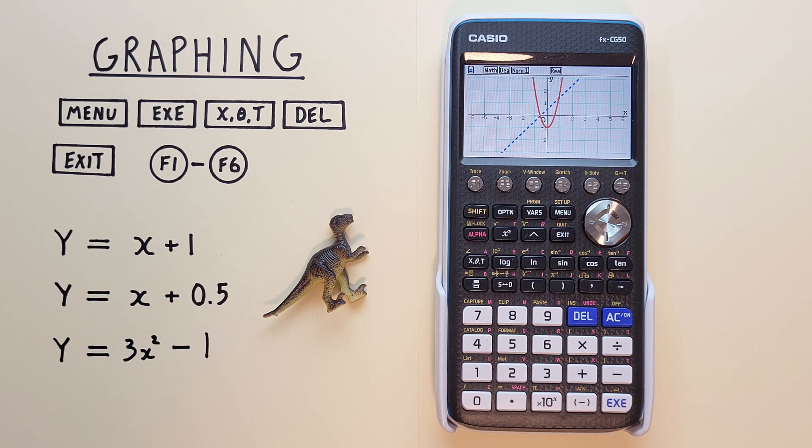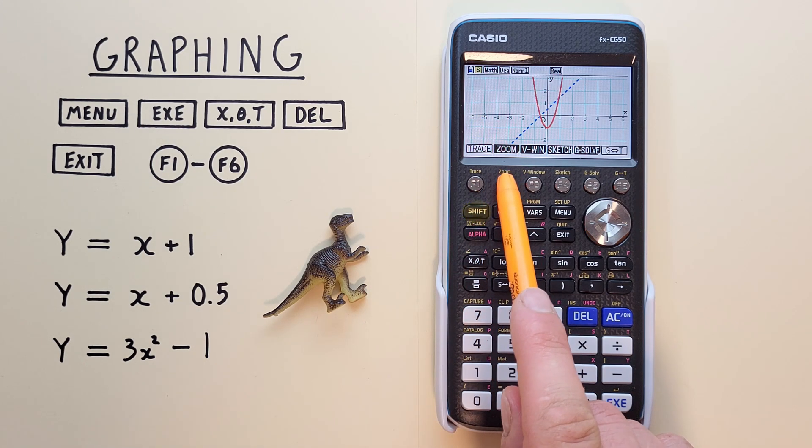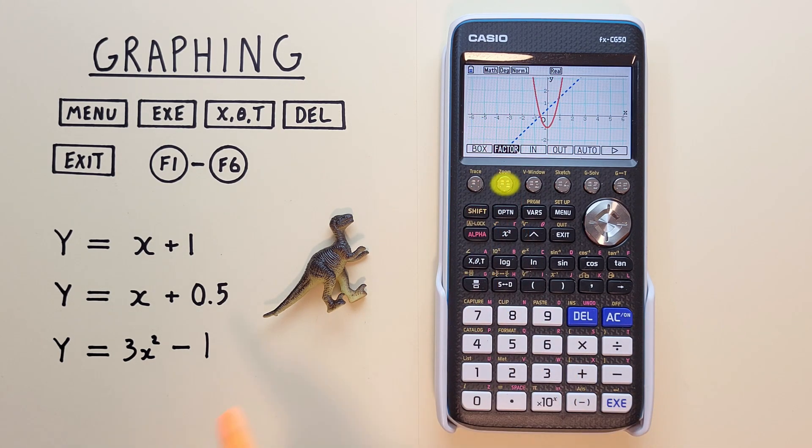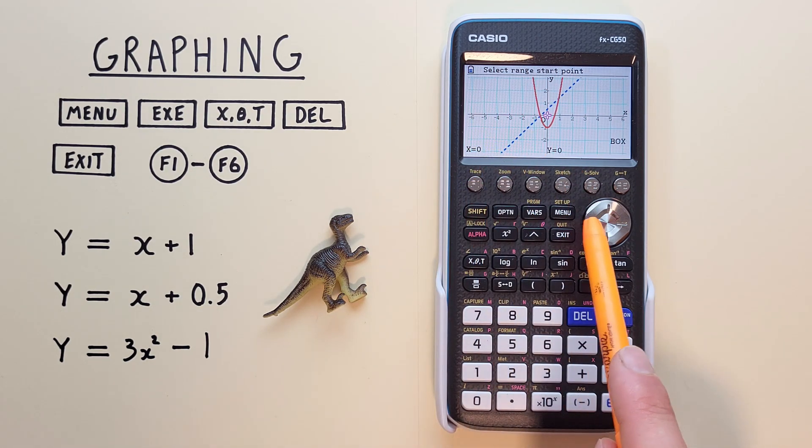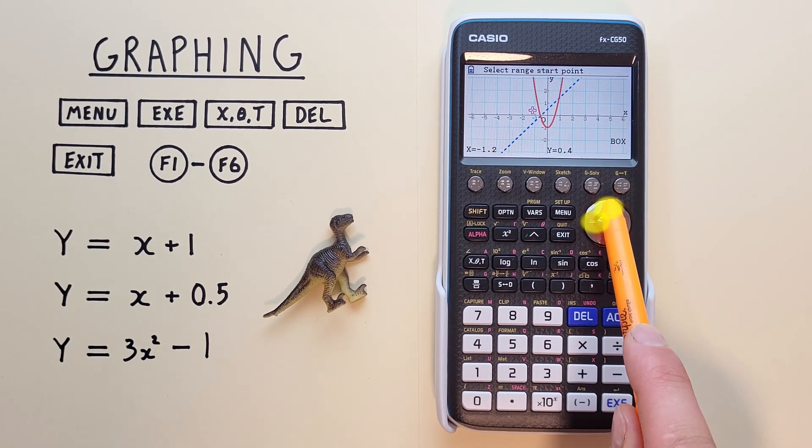If we want to zoom in on a specific section, we can use the Box Zoom. To do that, we press Shift, F2 for Zoom, and then select F1 for Box. Then we see the cursor on our screen, and we can move it over to select our box.